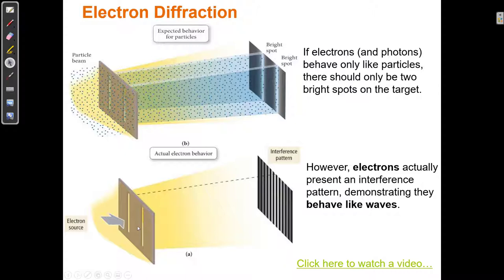When you put a camera here, then you can't catch it going through both at the same time, because when you put a camera here, you're looking at it. And by looking at it, you're causing it to, you're changing it. You're causing it to either choose the left or the right, so then it will go in the left side or the right side.